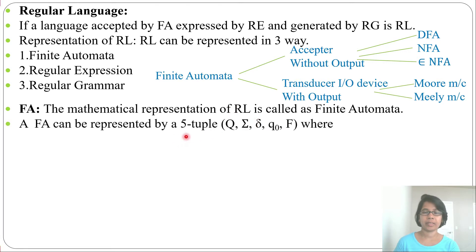A finite automaton can be represented by a five-tuple: Q, sigma, delta, Q0, F.